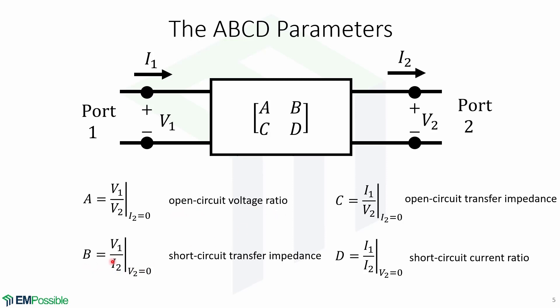The parameter B equals V1 over I2 when V2 equals 0, which means that this is the short circuit transfer impedance. The third element is C, which is the open circuit transfer impedance defined by I1 over V2 when I2 equals 0.